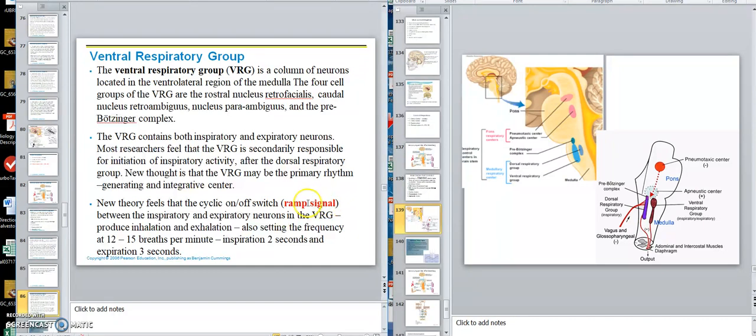It will spontaneously fire a ramp signal that will initiate inhalation. Remember, inhalation is active. So I want to start right here. I'm going to close this video right here, and I'm going to start right here at this VRG and ramp signal. But there is still some question. The DRG may be doing quite a bit itself by sending signals to the VRG, and the VRG sends it to the somatic motor nervous system. But anyway, we're going to start right there.